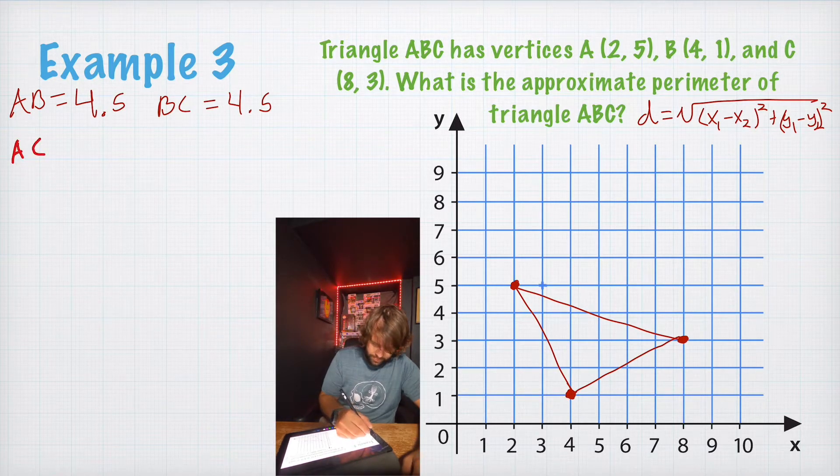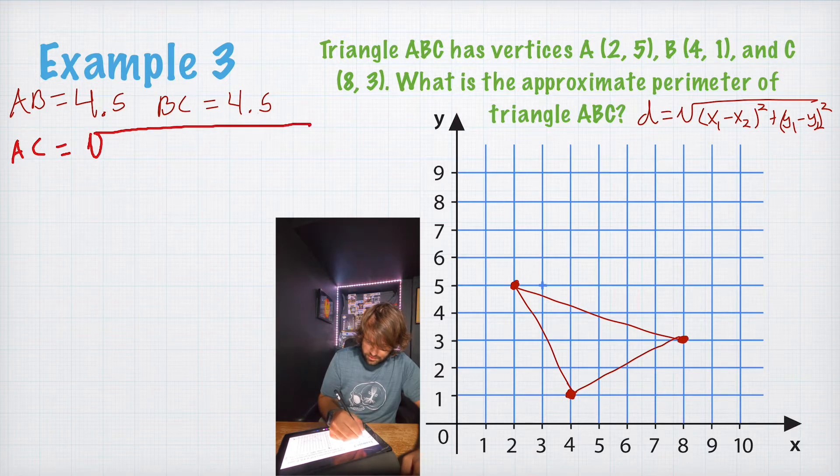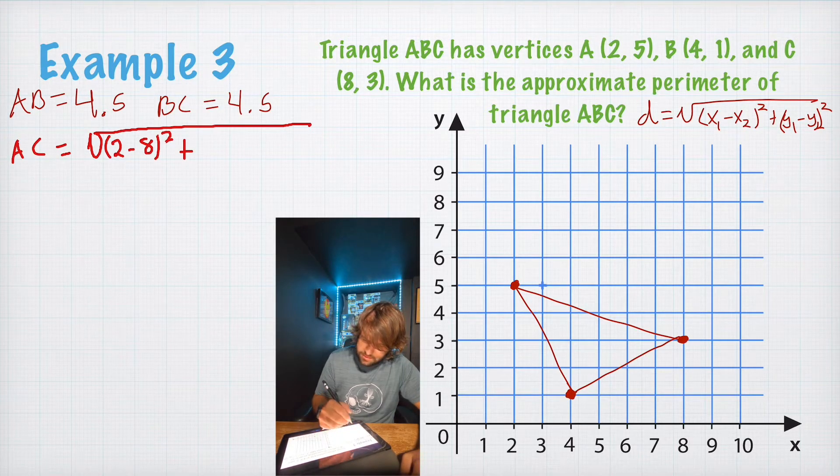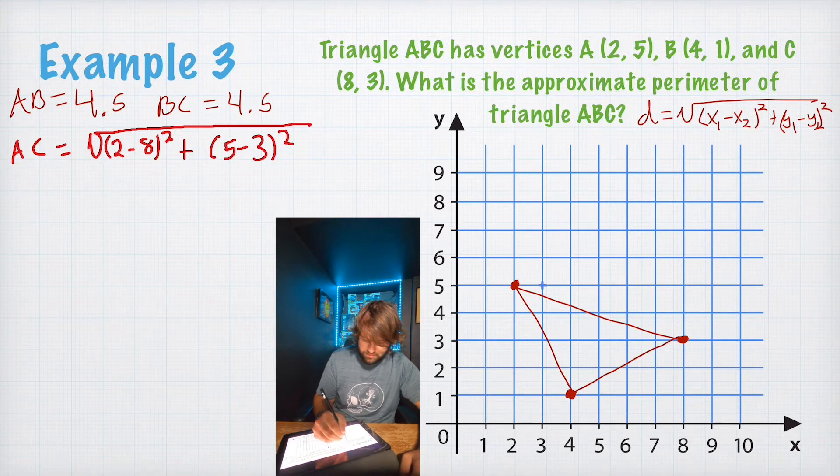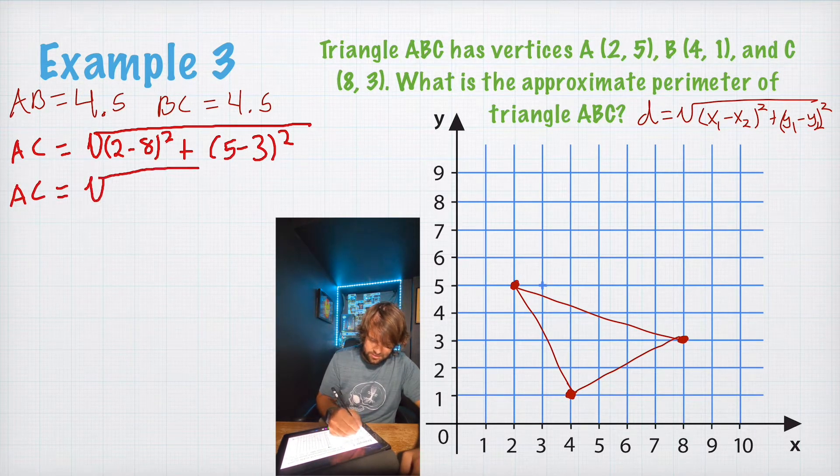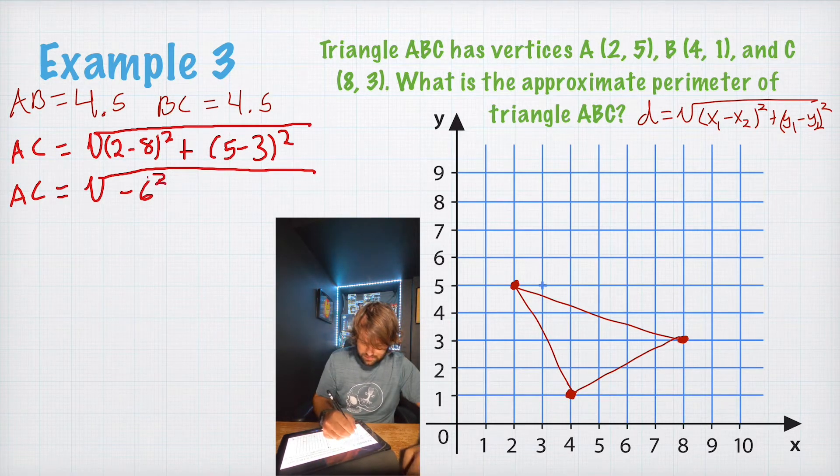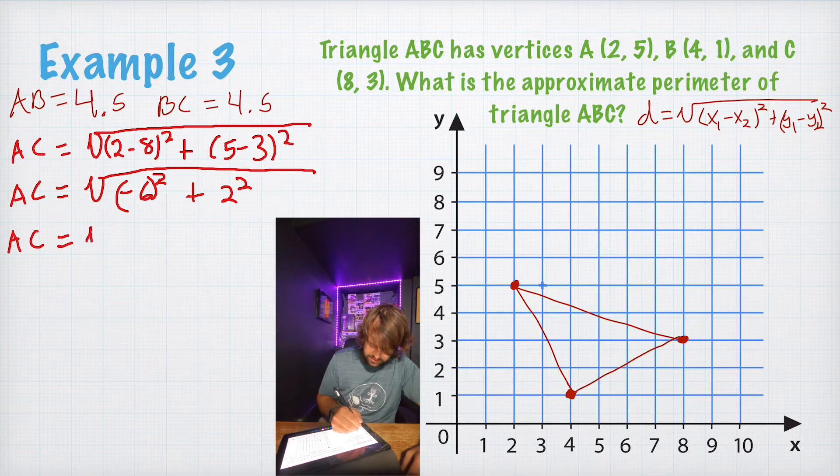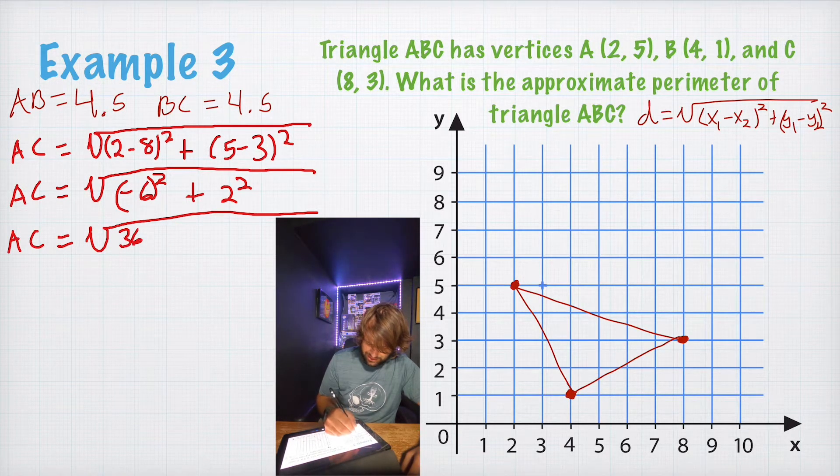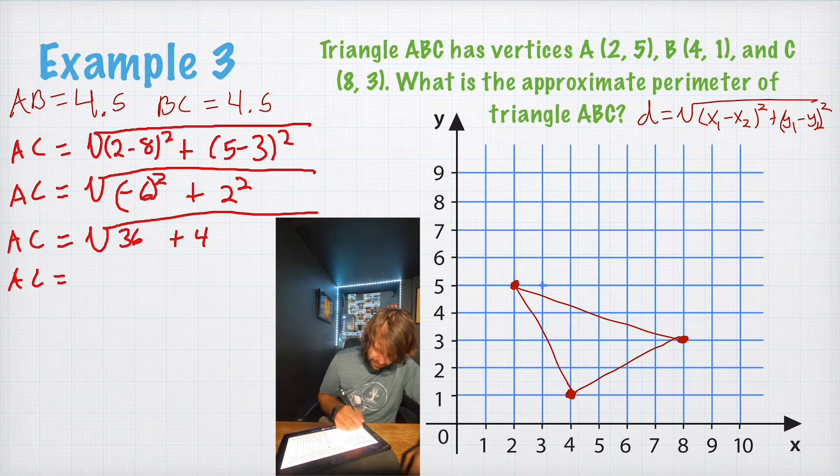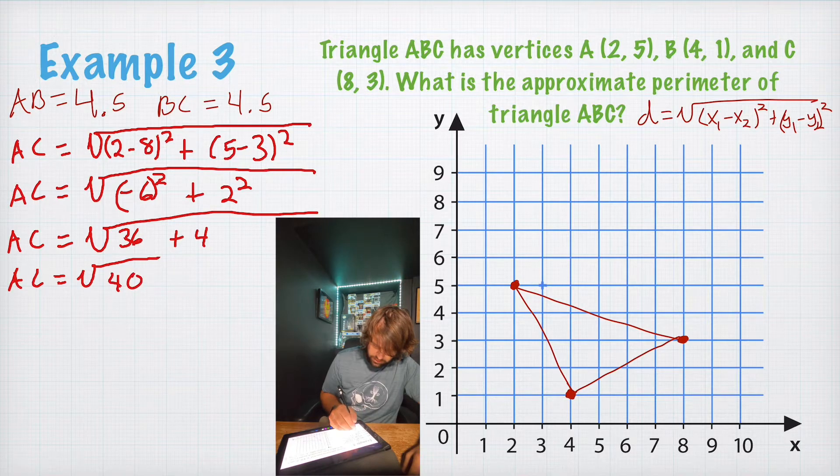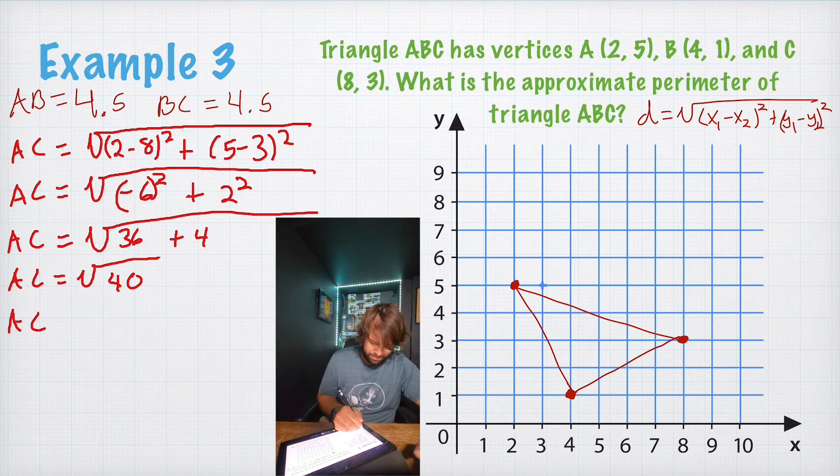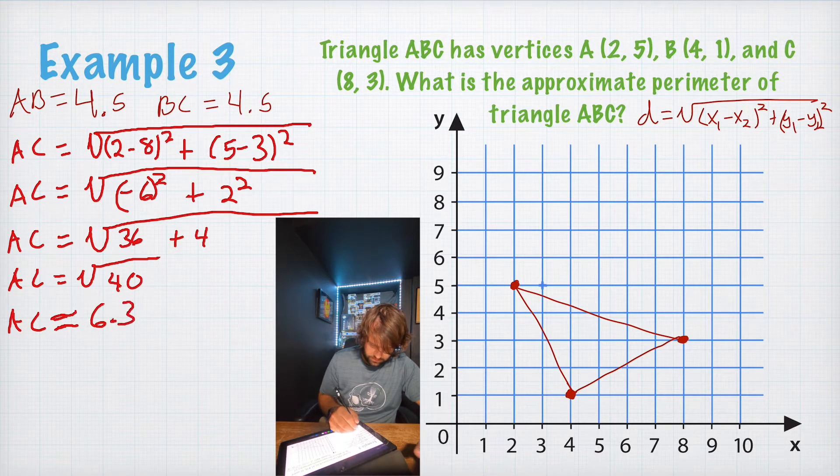AC is going to equal the square root of 2 minus 8 squared plus 5 minus 3 squared. AC is going to equal the square root of negative 6 squared plus 2 squared. So, AC is going to equal the square root of 36 plus 4. AC equals square root of 40, which is going to give us roughly 6.3.